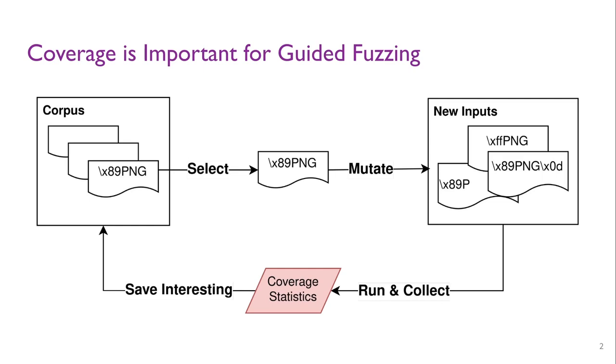Next, the fuzzer executes the target program with mutated inputs and collects coverage statistics of these runs. Finally, the fuzzer saves input to corpus if it can trigger bugs or find new program states.